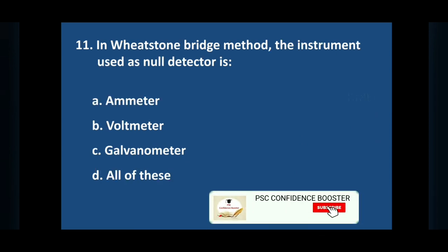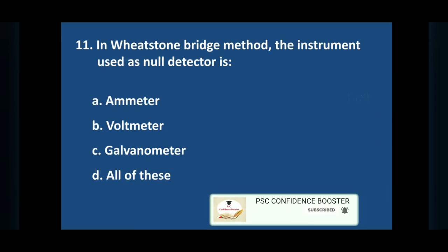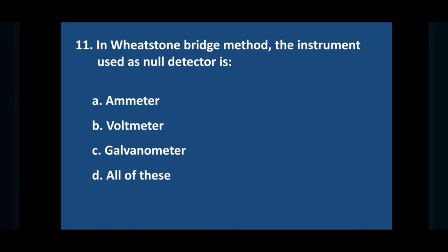Question number 11: in Wheatstone bridge method the instrument used as null detector is. Answer is option C, galvanometer.